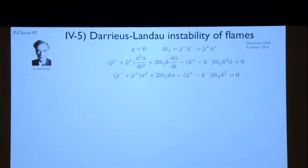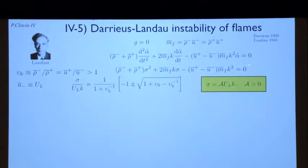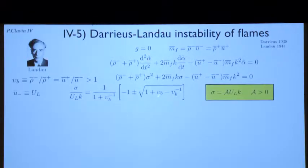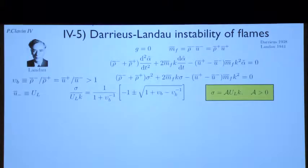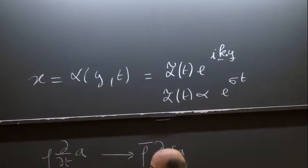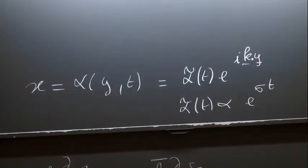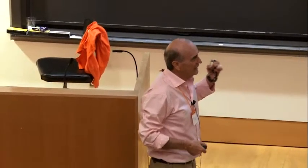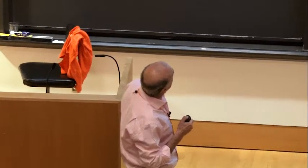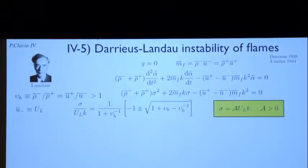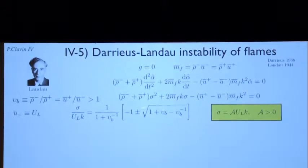Now I am back to the Darrieus-Landau instability. In this equation, I use a decomposition for tilde alpha — I use exponential alpha t. I look for solutions proportional to exponential sigma t, and I am looking for sigma, which is the growth rate. If the real part is positive, it's unstable; if it is negative, it is stable. And is there any frequency or not? The answer is simple: you obtain a second-order algebraic equation for sigma.